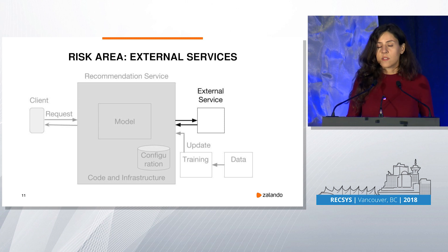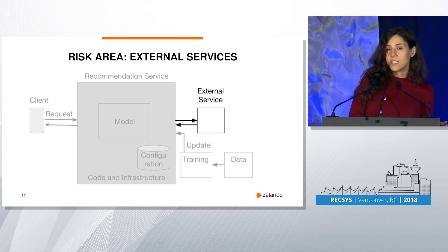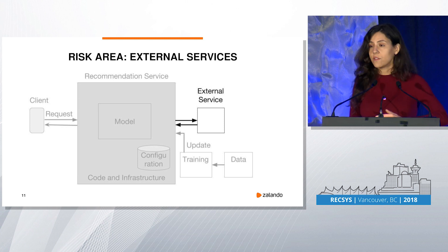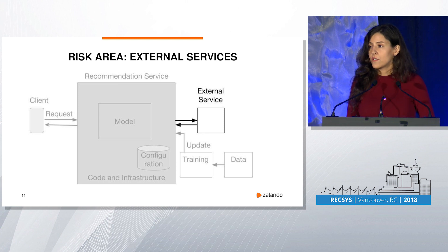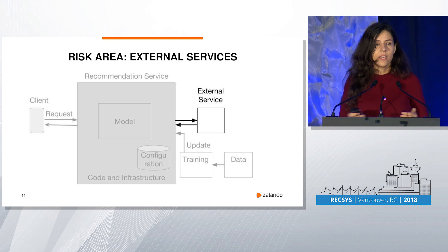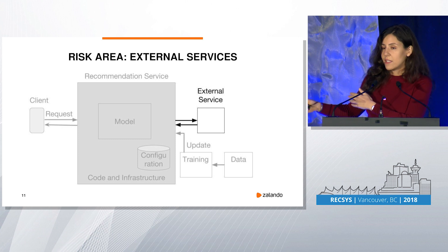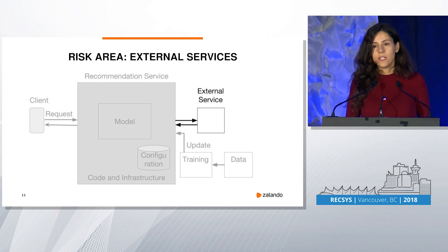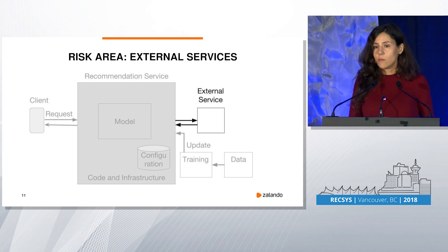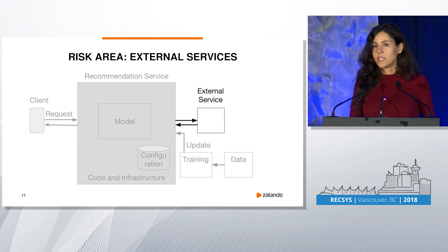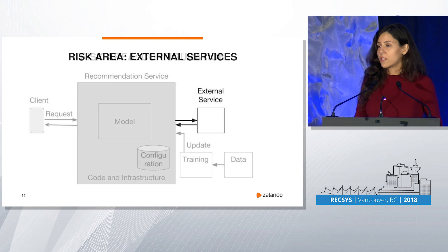Another problem is external services. Maybe you switch from one metadata service to another and you want to know if this impacts your quality. Or maybe you use a field from this metadata service and it used to be populated in 80% of cases, but it degrades over time — suddenly only 40% are available. Your quality suffers because you filter based on this field. This has nothing to do with your model, but many of those factors actually substantially affect your quality.